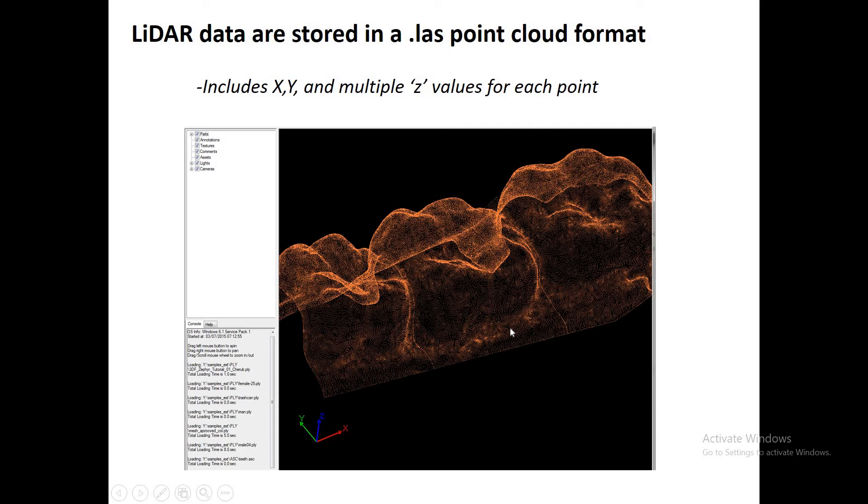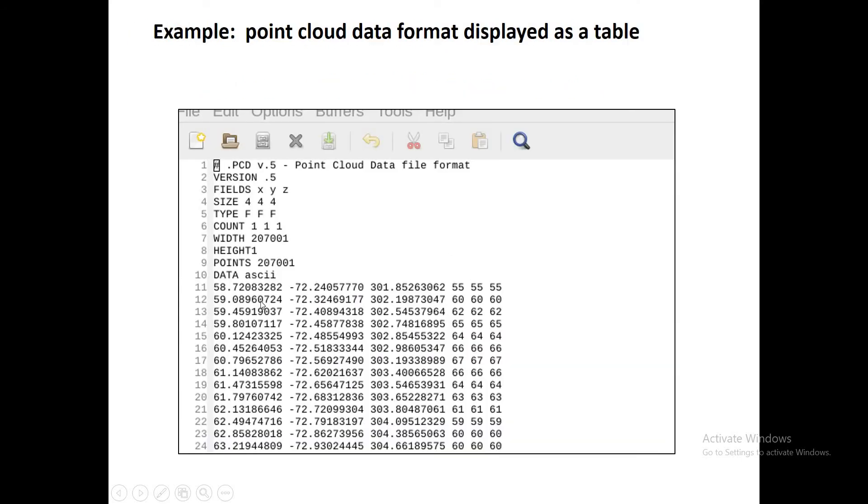To deal with this complexity, the irregular spacing and the multiple returns of LiDAR data, it's helpful to use a format called point cloud. You'll usually see this with LiDAR data with an extension .las or sometimes .laz. Point cloud is unique because typically it's a list of x and y coordinates of the shot point, and then multiple z values, and possibly the classification associated with each of those z or elevation values.